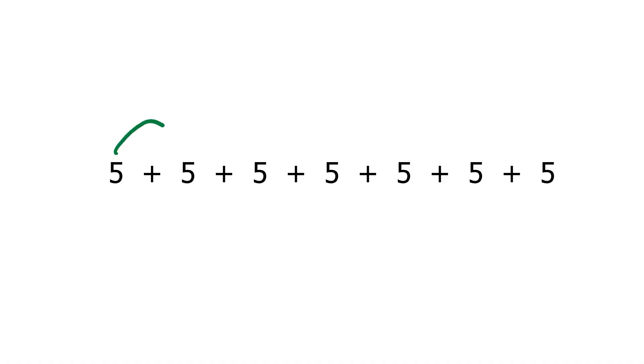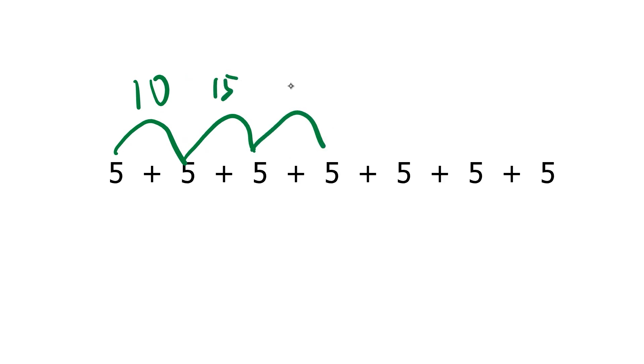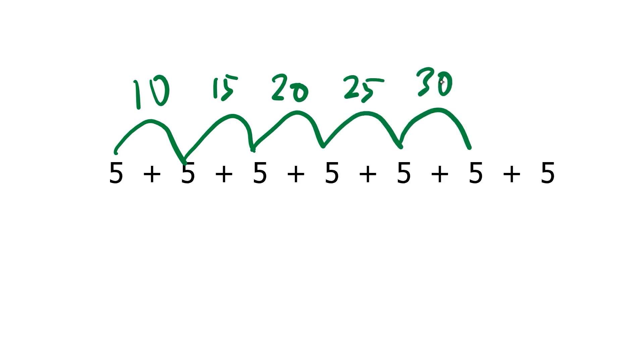So let's solve this problem by counting groups of five seven times. Five plus five is 10, 10 plus five is 15, 15 plus five is 20, 20 plus five is 25, 25 plus five is 30, 30 plus five is 35. So if you saved $5 for seven days, you would have $35.